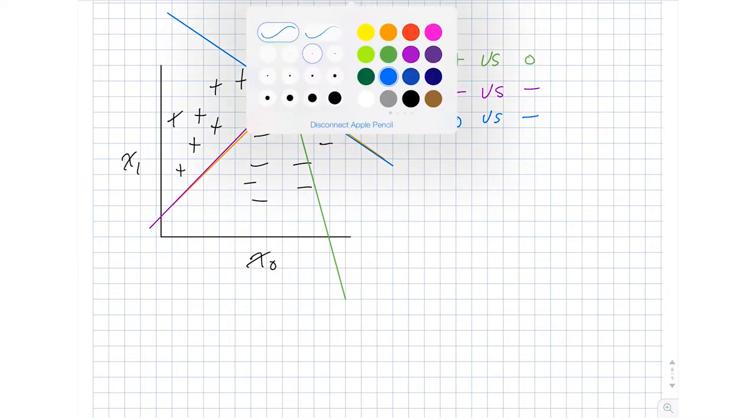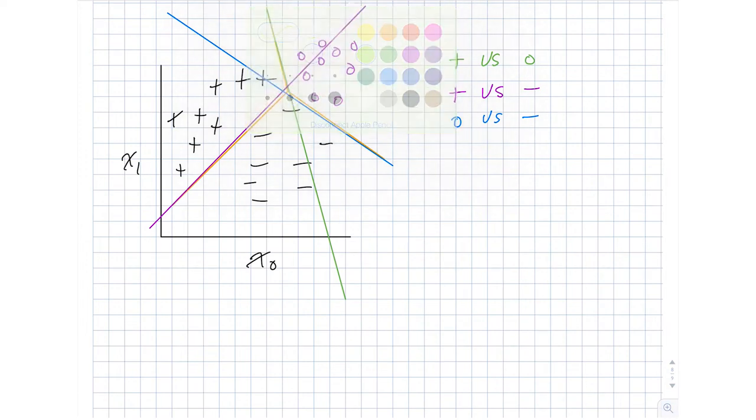So now imagine that I present this model with a novel point. So that's the light green that I just filled in there. And we want to classify that. So what the green classifier is going to do is it's going to make a distinction between pluses and O's. Since this new point falls on the right-hand side of that line, it's going to give a vote for an O.